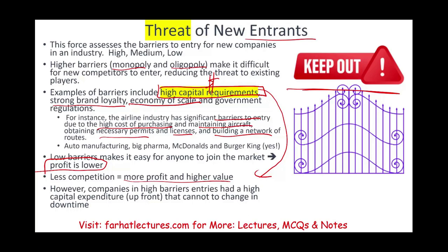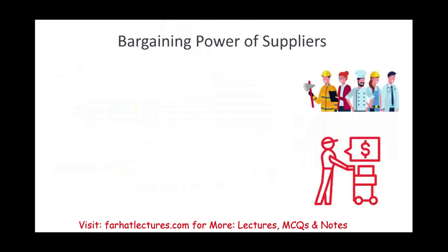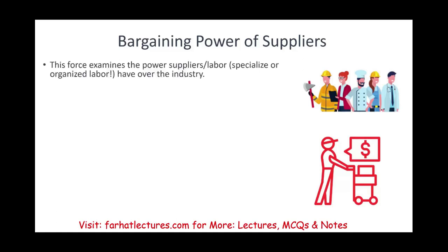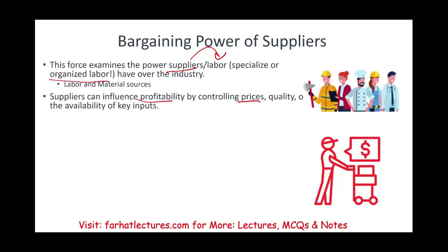The third force is the bargaining power of suppliers. No company can exist without employees and suppliers. This force examines the power suppliers hold — and that includes labor, since specialized labor like nurses, CPAs, IT professionals, or AI specialists is expensive and rare. If labor is organized, like a pilot union, they can demand higher pay. Suppliers can influence profitability by controlling prices, quality, and access to inputs. If they feel they have the upper hand, they will raise prices, increasing your costs and reducing your profit.